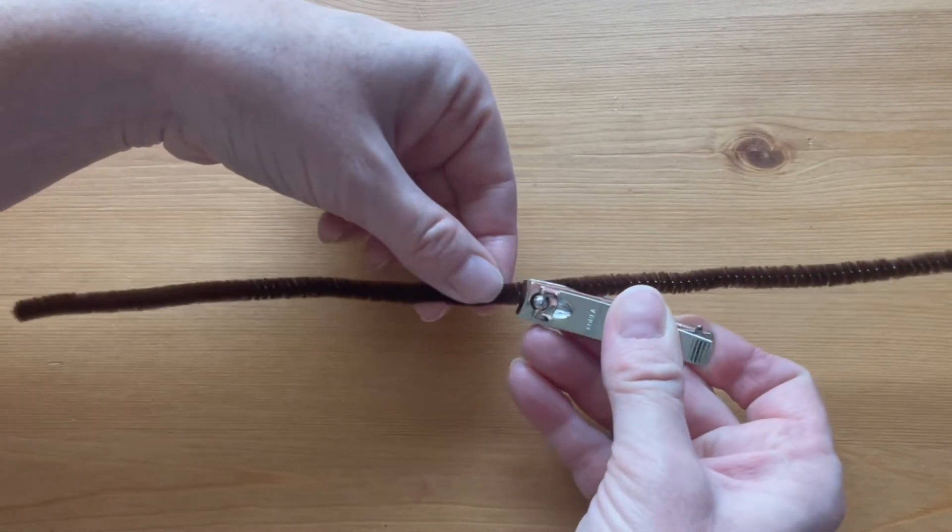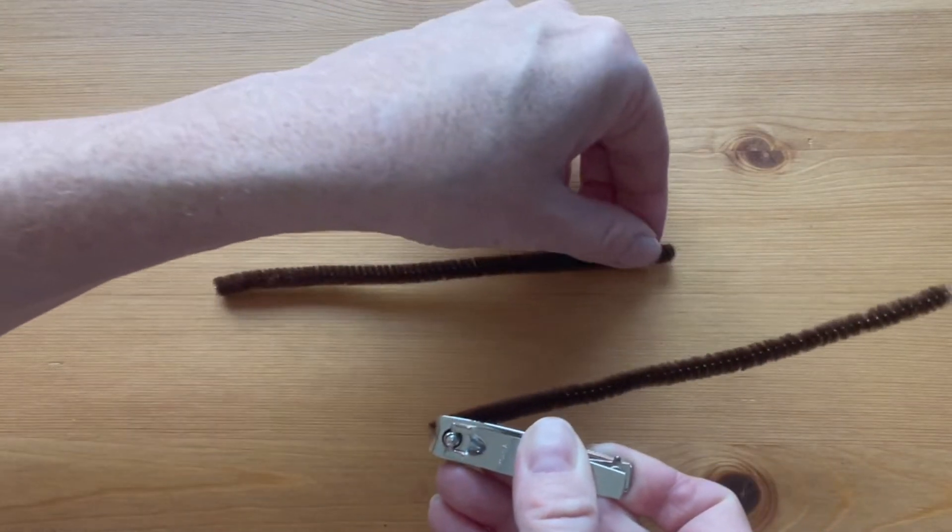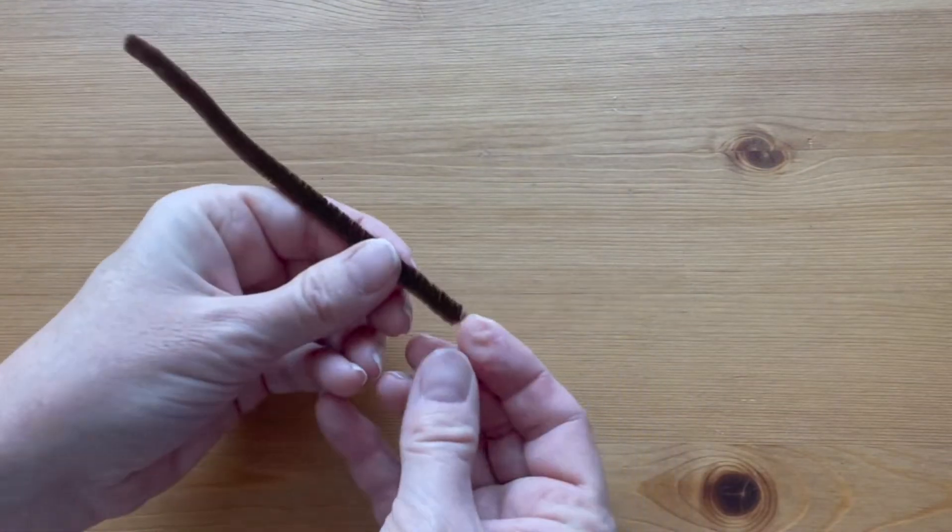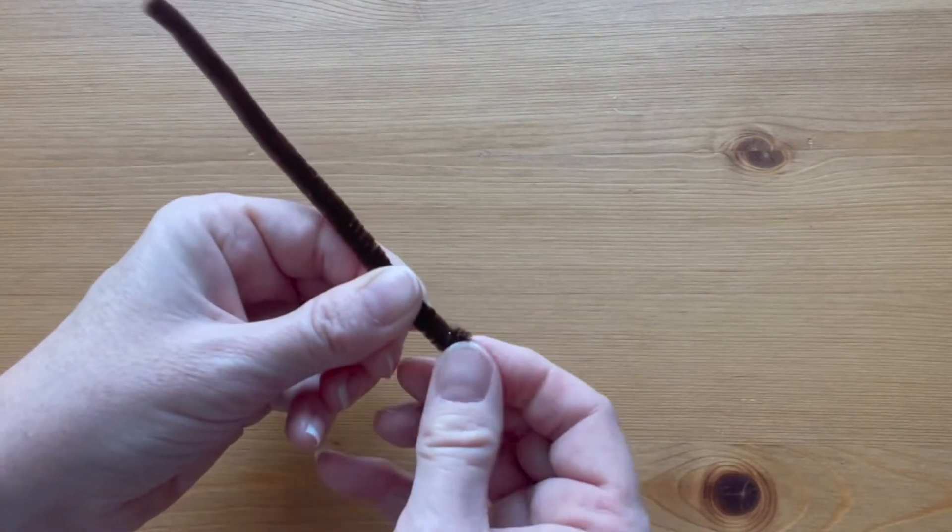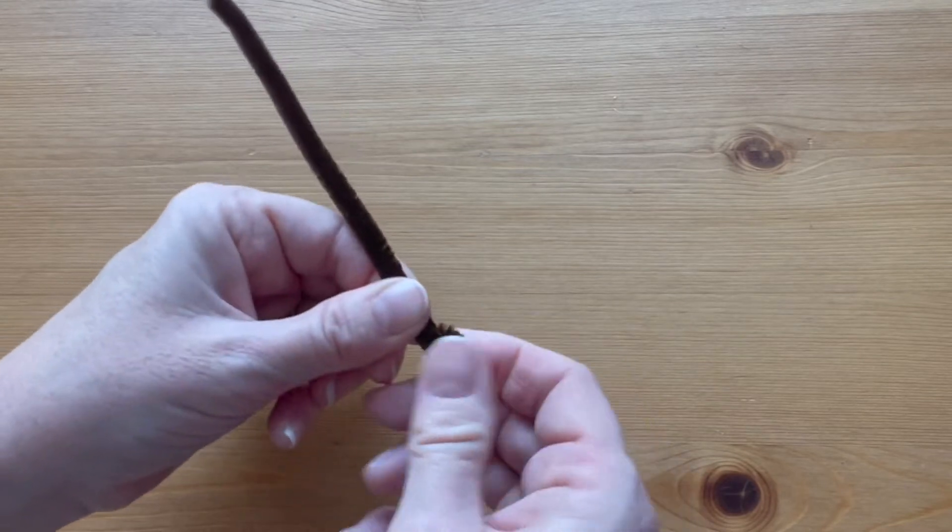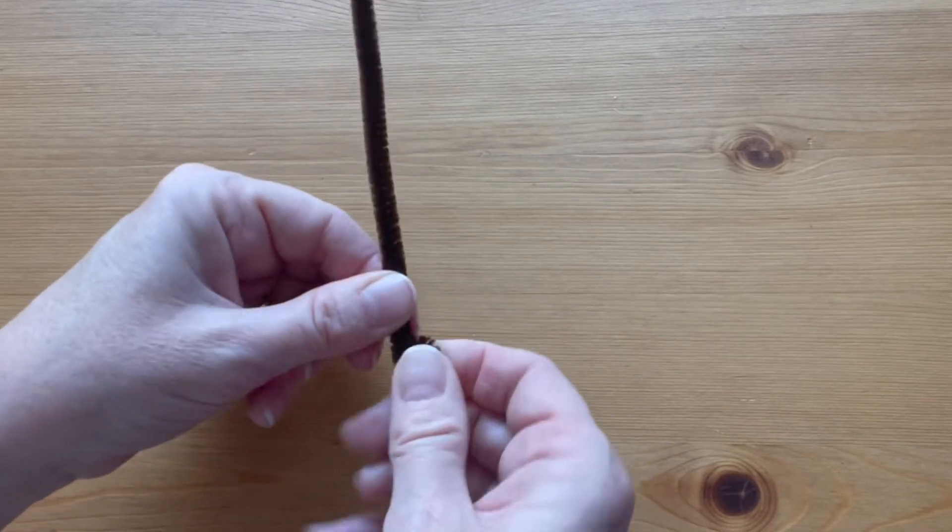Take the brown pipe cleaner and cut it in half with the fingernail clippers. With one half, start coiling the end. Nice, flat, tight coil to make the head of the turtle.